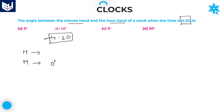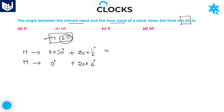For the hours hand, for every 1 hour it covers 30 degrees, so for 4 hours that is 4 into 30. For the remaining 20 minutes, the hours hand will move half a degree for every 1 minute, so 20 into half. For the minutes hand, it covers 6 degrees for every 1 minute, so 20 into 6. The hours hand total: 4 into 30 is 120, plus 10, equals 130 degrees. The minutes hand total: 0 plus 20 into 6 equals 120 degrees.